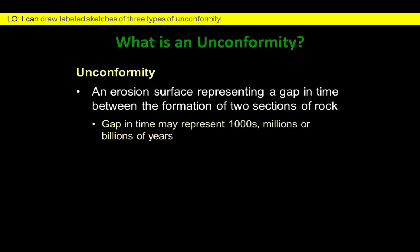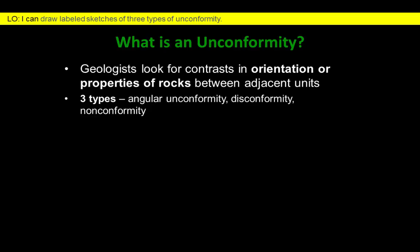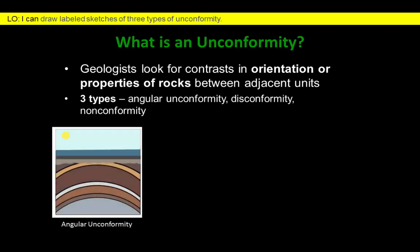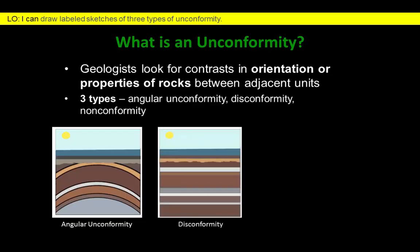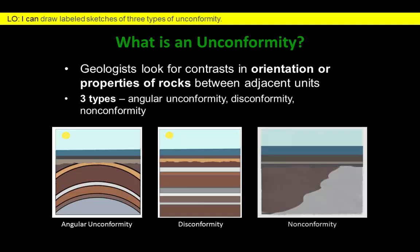If rocks have been eroded away or were not formed in the first place, we have no way of interpreting what was going on at that time in Earth's past. Most unconformities are old erosion surfaces. We recognize them because the rocks above and below the surface have different orientations or different properties. There are three types of unconformities we would like you to learn about.